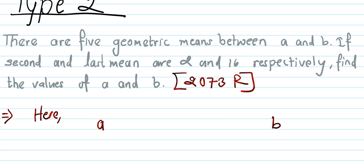There are 5 geometric means: u, m1 is the first mean, m2 is the second mean. The second mean is given as 2, so second mean equals 2.